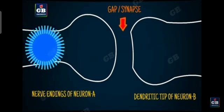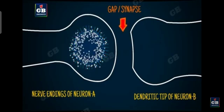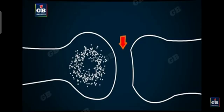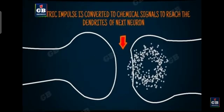At the ending of the axon, at the site of nerve endings, the electrical impulse triggers the release of some chemicals. That means the electric impulse is converted to a chemical signal. These chemicals cross the gap and reach the dendrite of the next neuron.